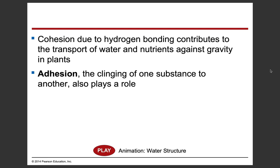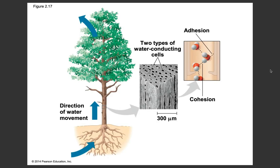Adhesion is the clinging of one substance to another. Think of the word "adhesive" — it's like glue. So cohesion is water sticking to itself, and adhesion is water sticking to other surfaces. In plants, both cohesion and adhesion — shown by dotted lines for hydrogen bonds — allow water to travel up those straw-like conducting structures against gravity. We'll use capillary tubes in our lab to demonstrate this transport of water and nutrients in plants.